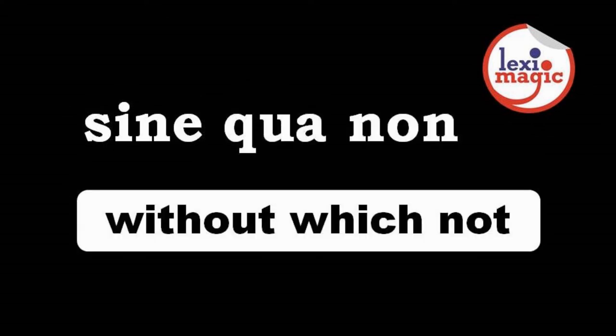Sine qua non translates to 'without which not.' The phrase refers to something which is an essential part of the whole and is absolutely necessary. For example, freedom of speech is a sine qua non to the smooth functioning of a good democracy.